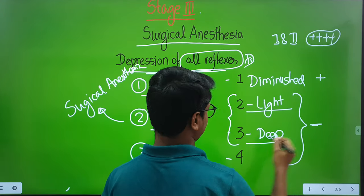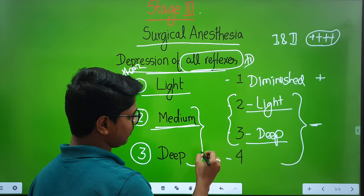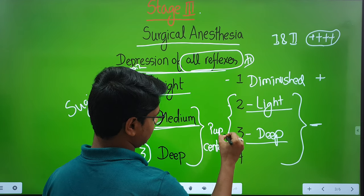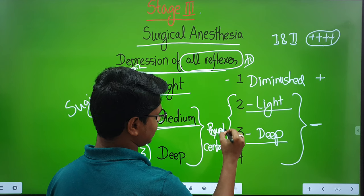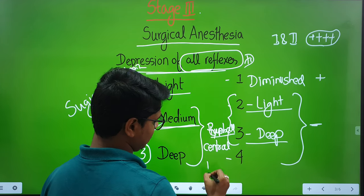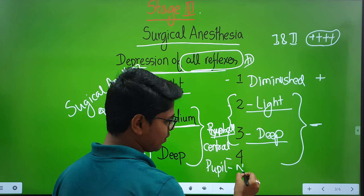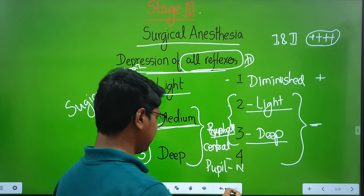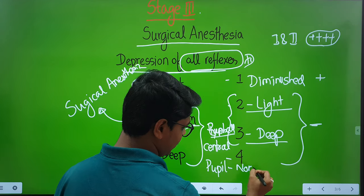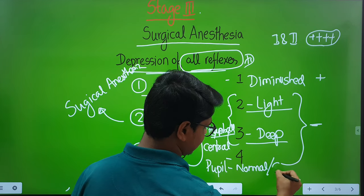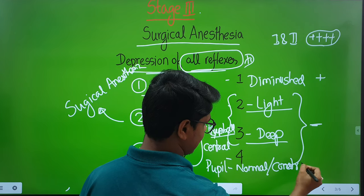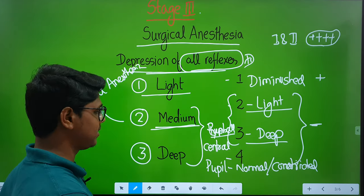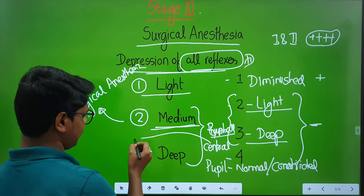Regarding the eyeball position: the pupil will be normal and the eyeball position will be central in the medium and deep plane. Pupil was dilated in Stage 1 and Stage 2 because of epinephrine, but in Stage 3 you will find a normal or constricted pupil. Another objective-type question usually asked: in case of dog and cat, the eyeball position is ventromedial.